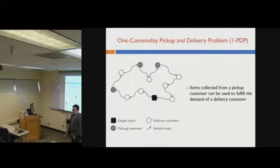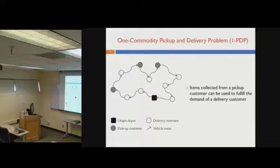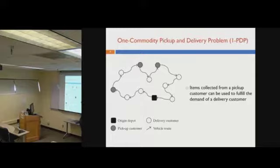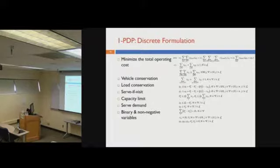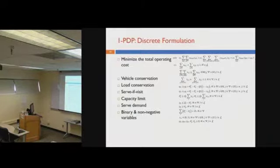Without proper rebalancing operations, the bike sharing system would very likely fail. In the literature, this type of bike sharing rebalancing problem is modeled as what we call the one-commodity pick-up and delivery problem. It is a variant of the vehicle routing problem. The unique part is that the items being considered are identical, so the item collected from a pick-up location can be used to fulfill demand at a drop-off location.